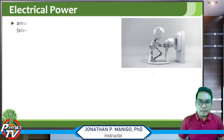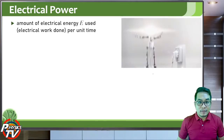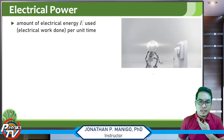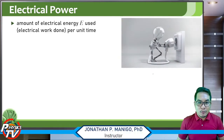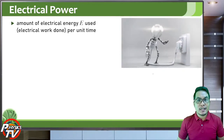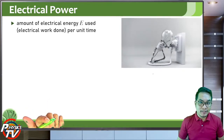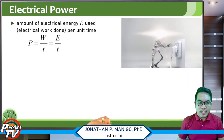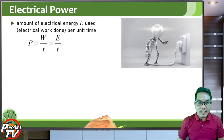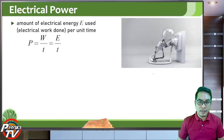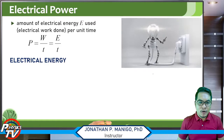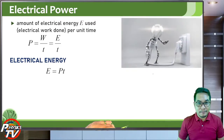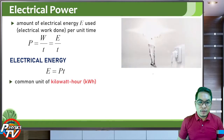Electrical power is the amount of electrical energy used per unit time, or the electrical work done per unit time. Work is basically energy consumed or energy spent per unit time. So we can define power as electrical energy consumed per unit time, and from this we see that electrical energy is just power times time.